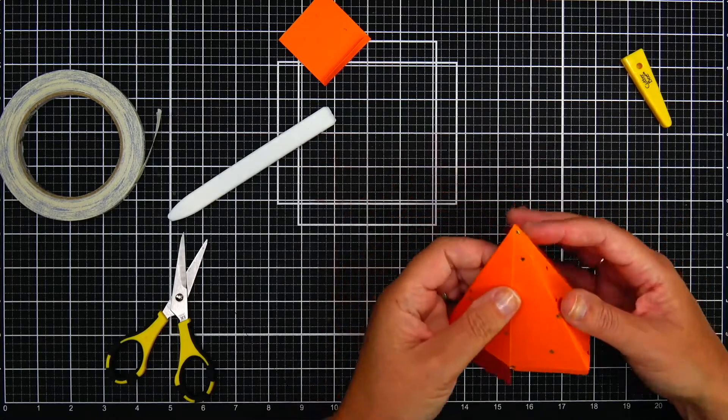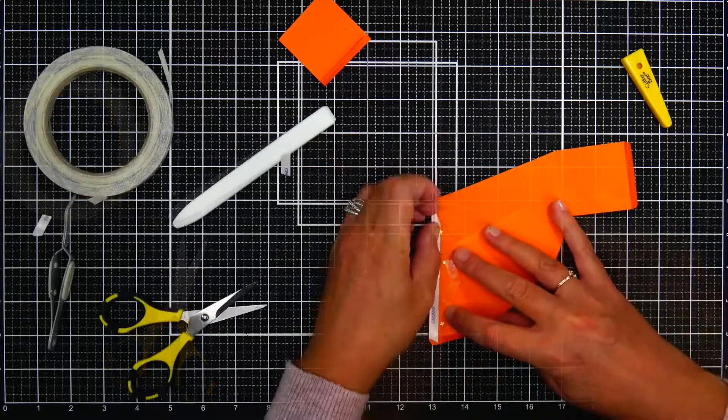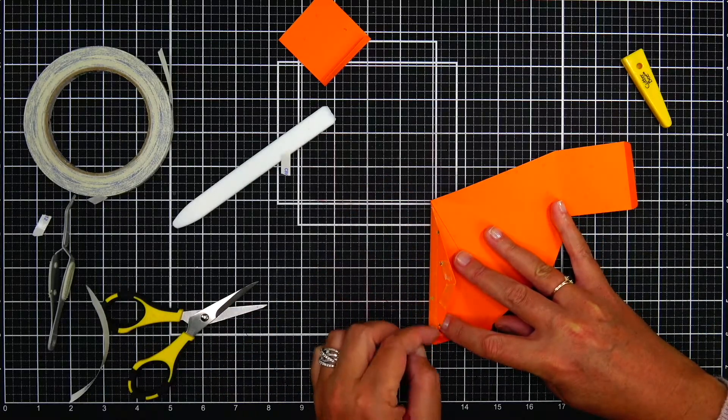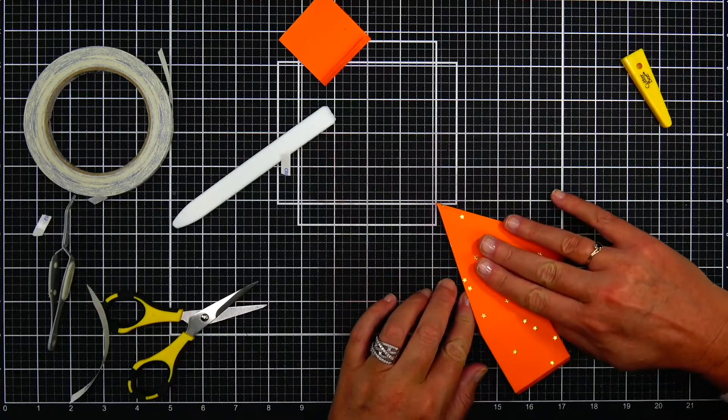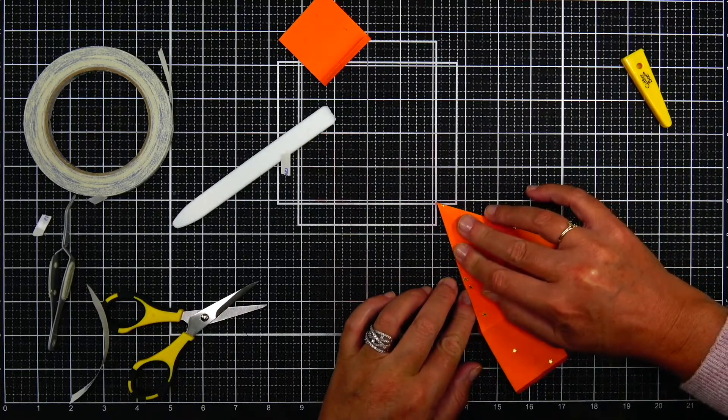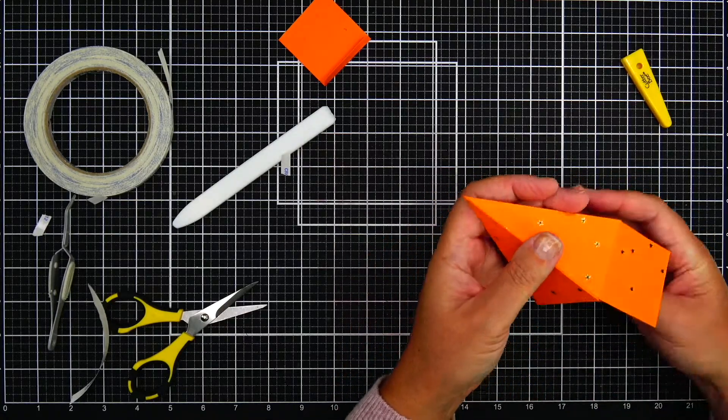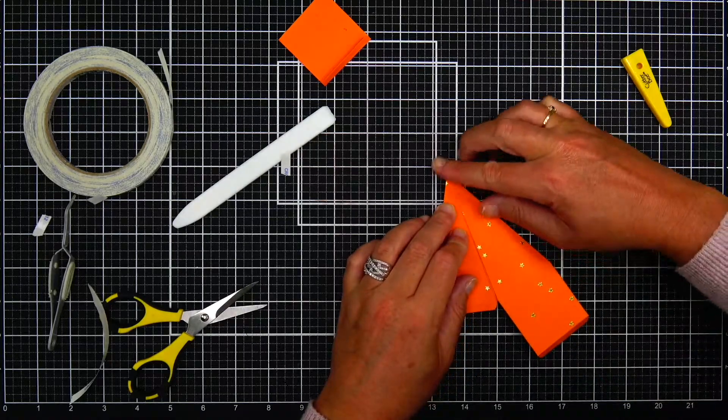After I have the first edge attached, doing the other side is really easy. I'm going to take the adhesive backing off and fold the paper over, making sure again that the edges match up, and then just push the paper down into the adhesive.